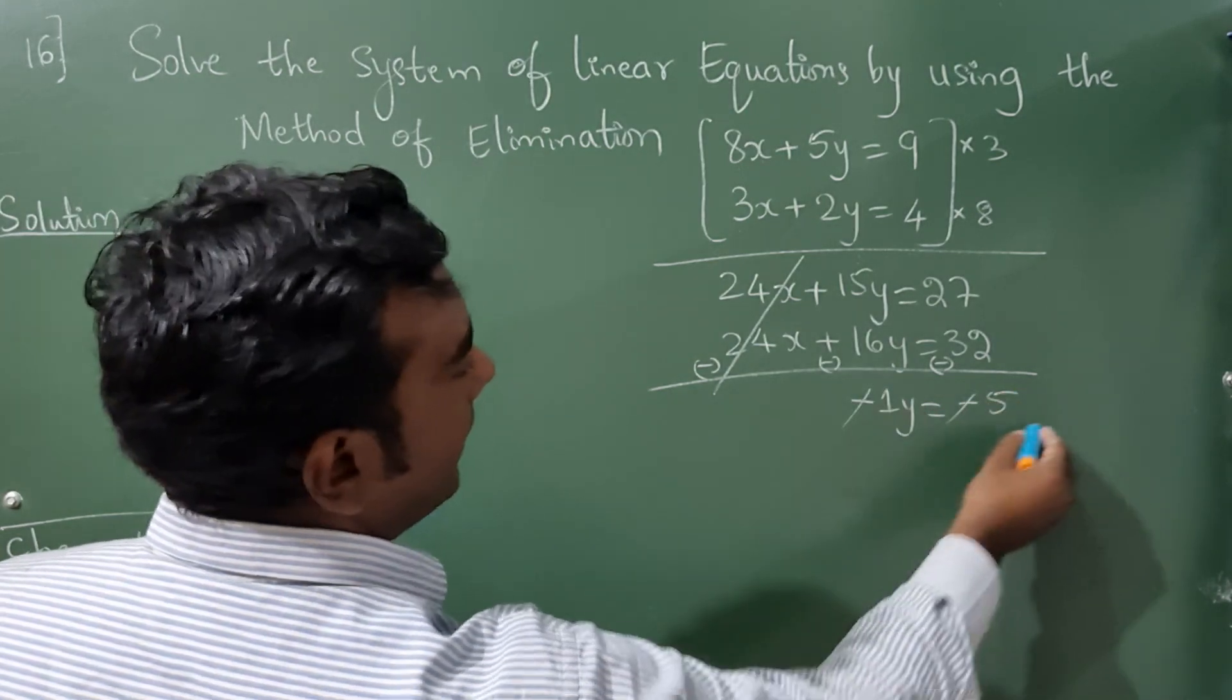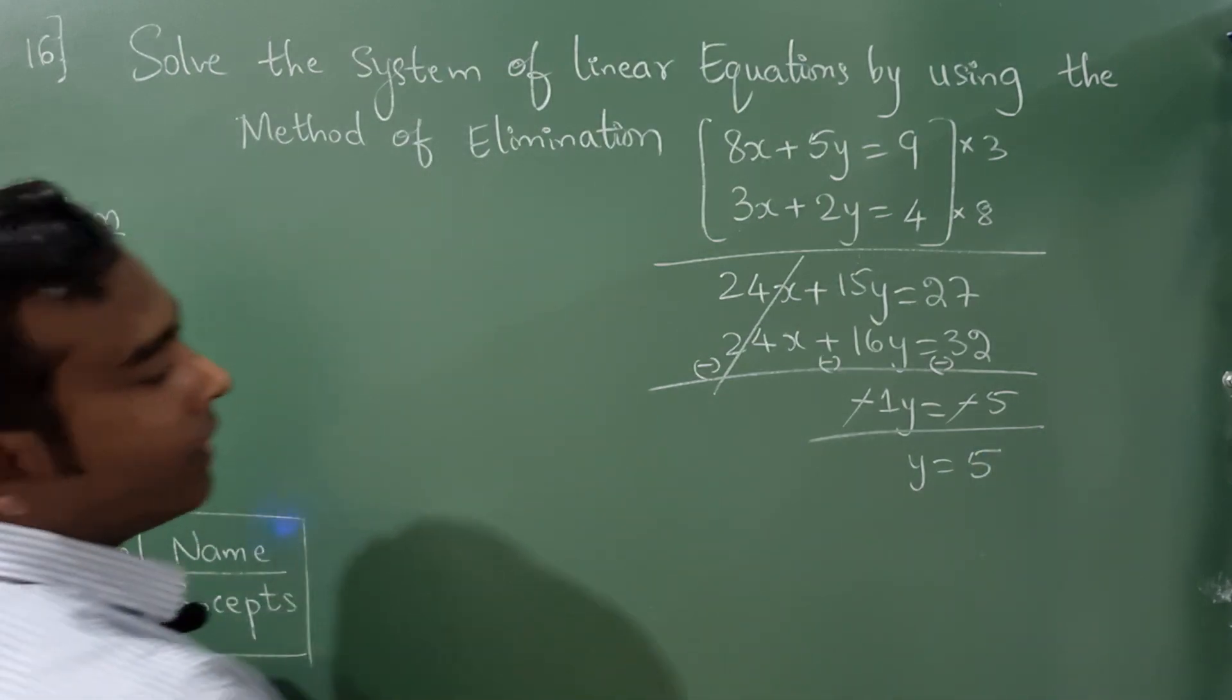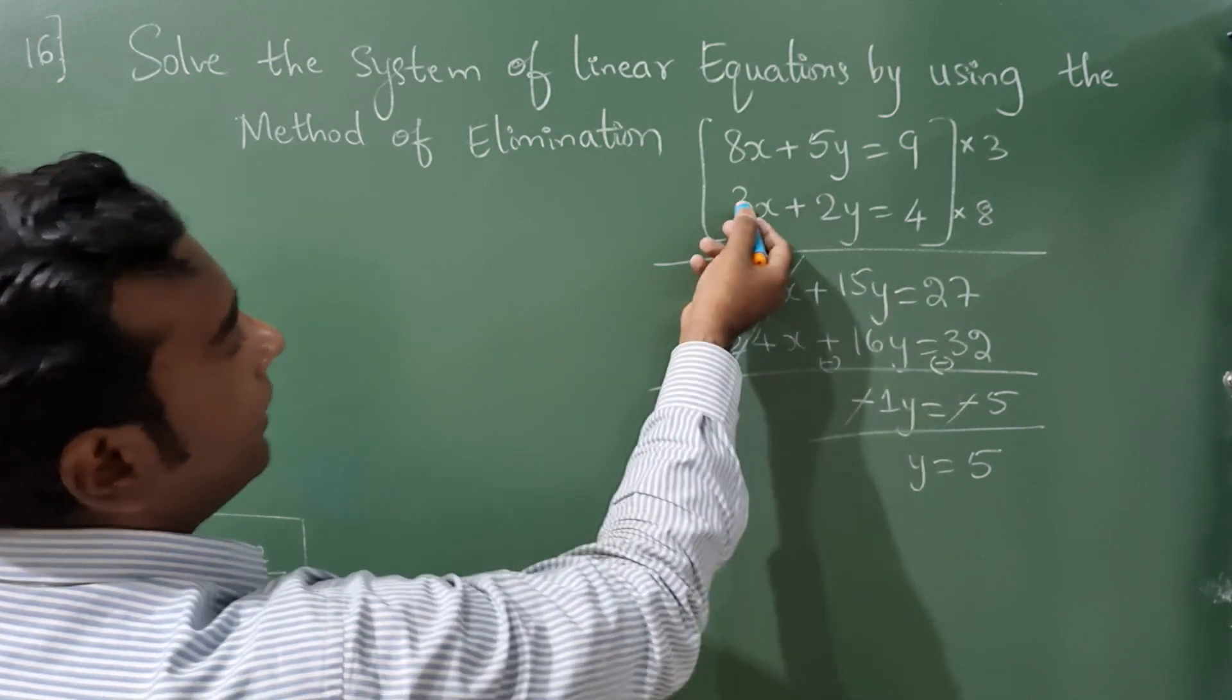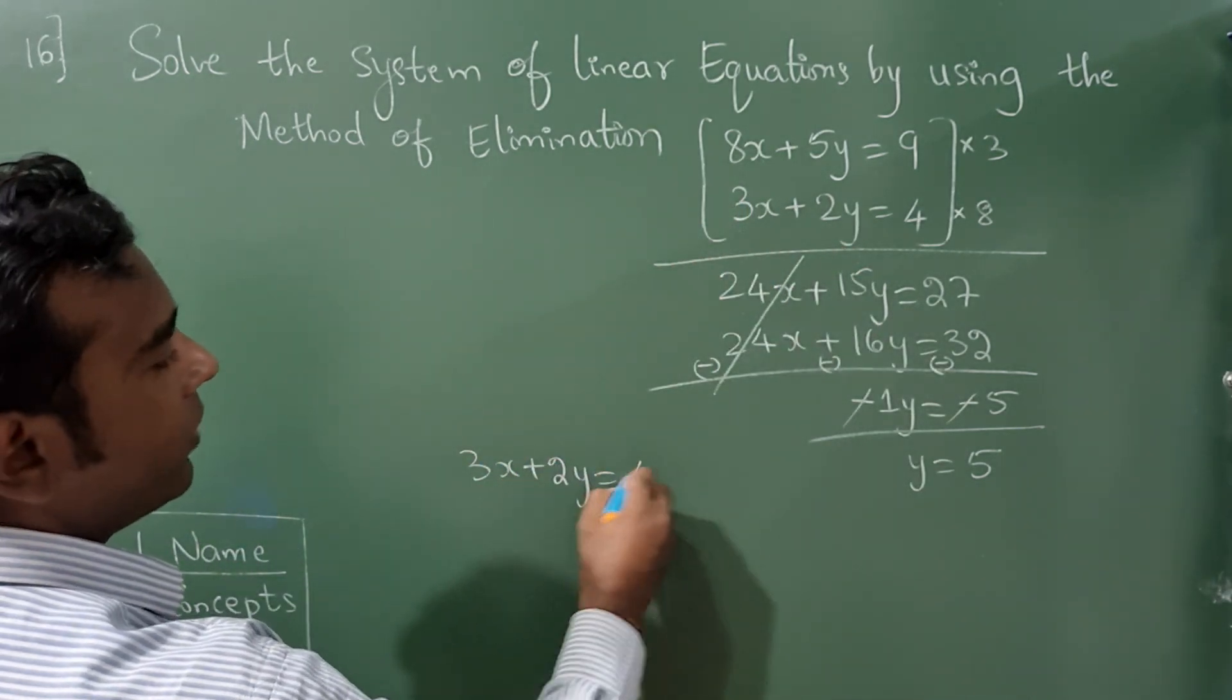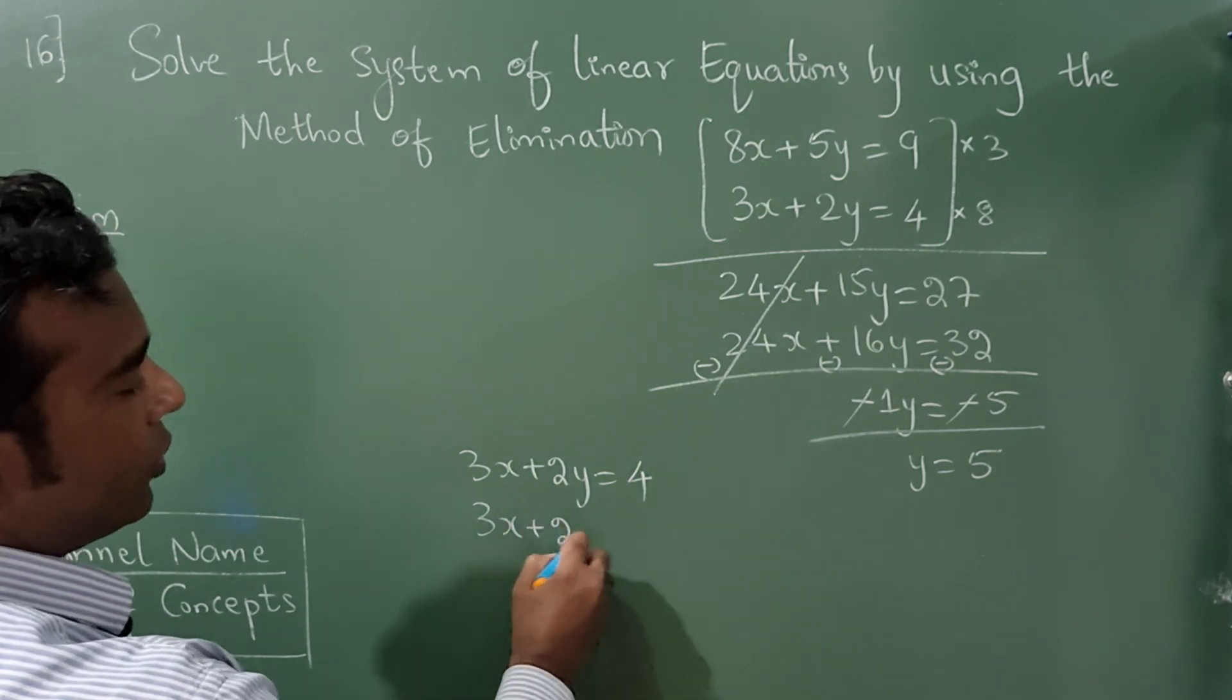Take this y value and substitute it into either equation. Let me take the second equation: 3x + 2y = 4. Now substitute y = 5 into the equation: 3x + 2(5).